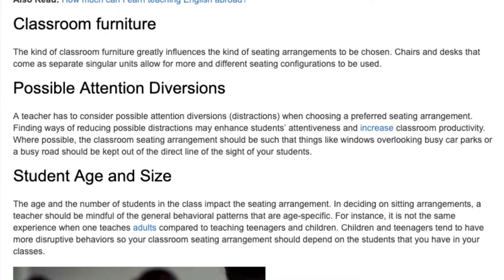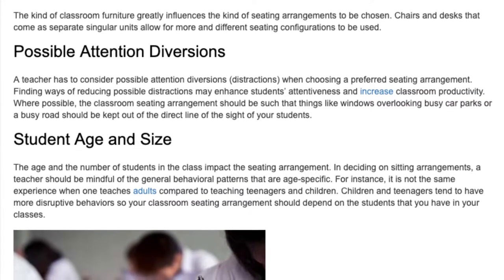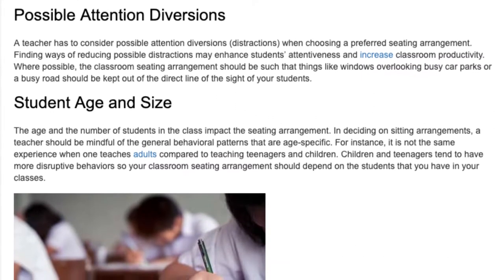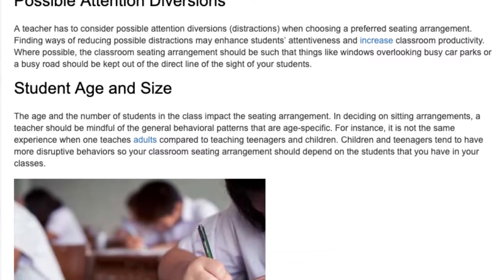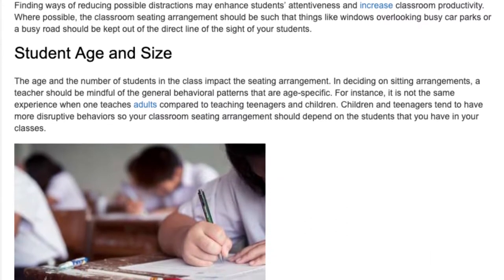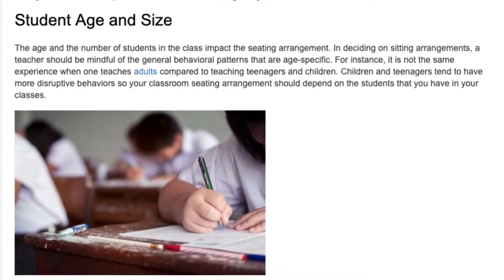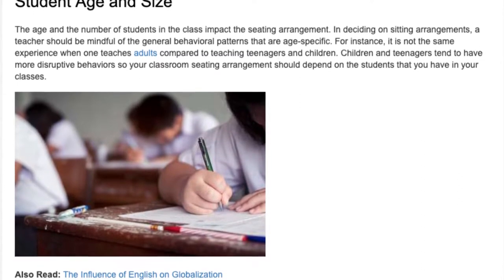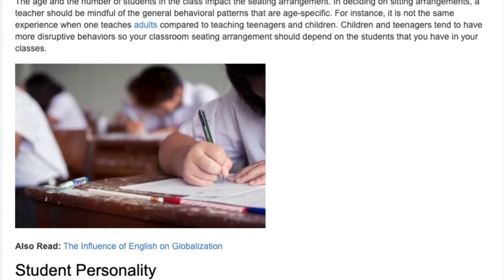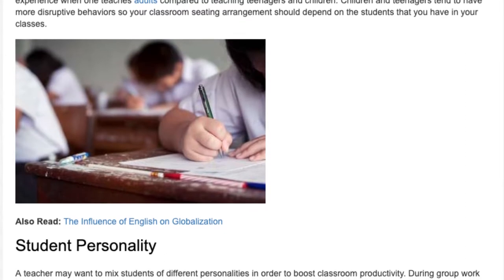Student age and size: the age and the number of students in the class impact the seating arrangement. In deciding on seating arrangements, a teacher should be mindful of the general behavioral patterns that are age-specific. For instance, it is not the same experience when one teaches adults compared to teaching teenagers and children. Children and teenagers tend to have more disruptive behaviors, so your classroom seating arrangement should depend on the students that you have in your classes.